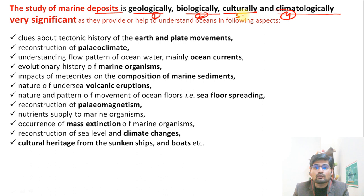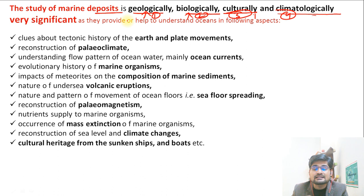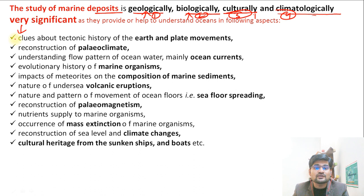Ocean deposits or marine deposits have four kinds of significance: geological, biological, cultural, and climatological. They are geologically significant, biologically significant, have cultural values, and are also climatologically significant as understood in the climatology lecture series. There are certain points on this screen that you can pause the video to note down.